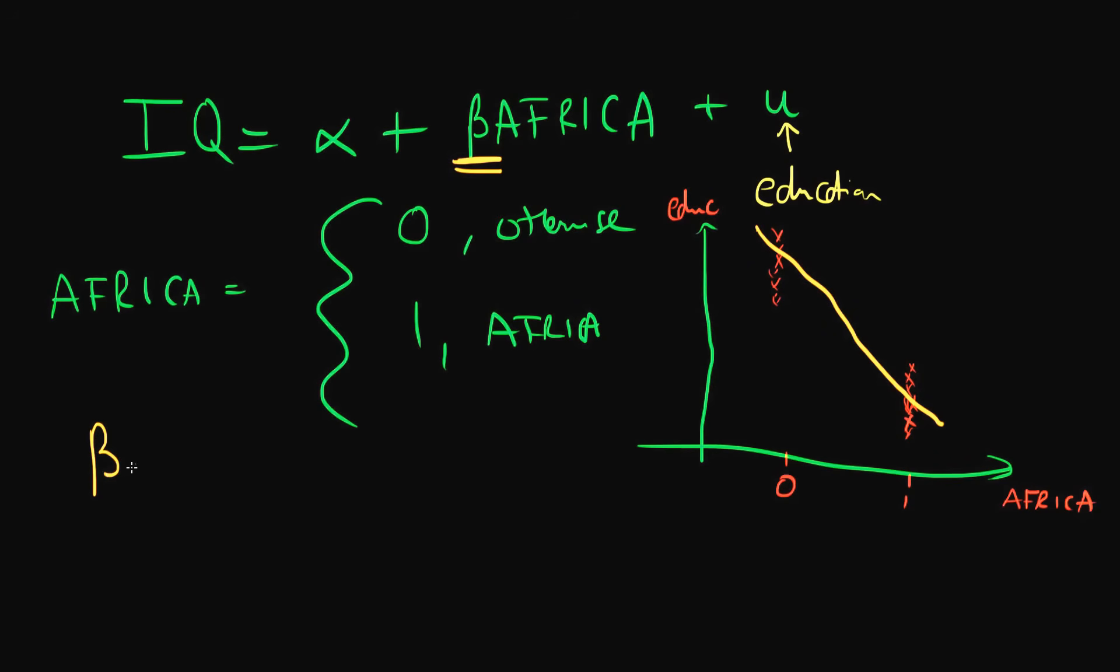Perhaps the true effect on an individual's test score of being in Africa is actually zero. There's no genetic or any other difference for an individual from Africa to do worse or better than an individual in the developed world. But because we left out our important variable education, our least squares estimator might suggest there is a ten point decrease in an individual's average IQ if they're from Africa.